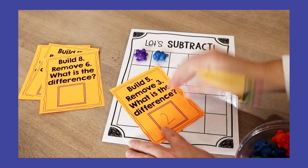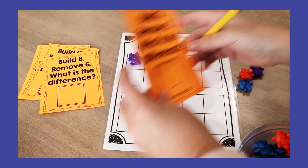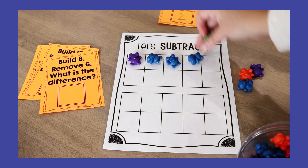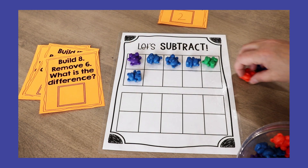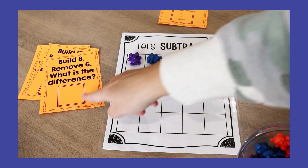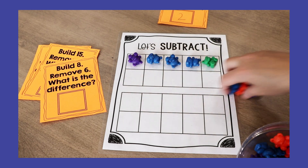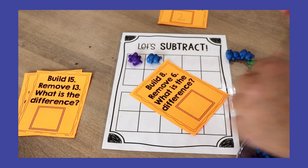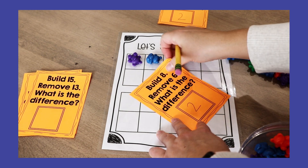Even if students already know that eight minus six is two, I still want to see them build it on the 10-frame. I want to see them remove the six and then write that difference. Especially in those K-2 classrooms, it is important for students to really understand what it means when I say eight minus six — to recognize and show what eight looks like, how to take six away, and the physical act of what subtraction really is.